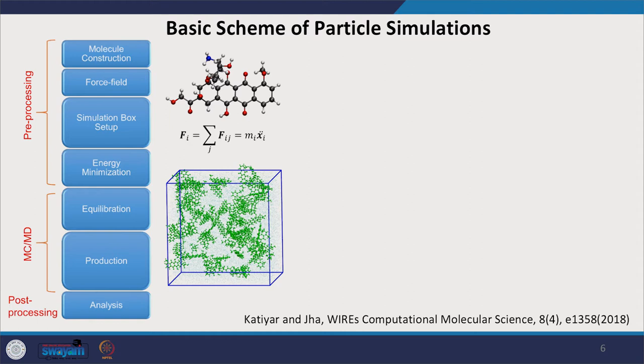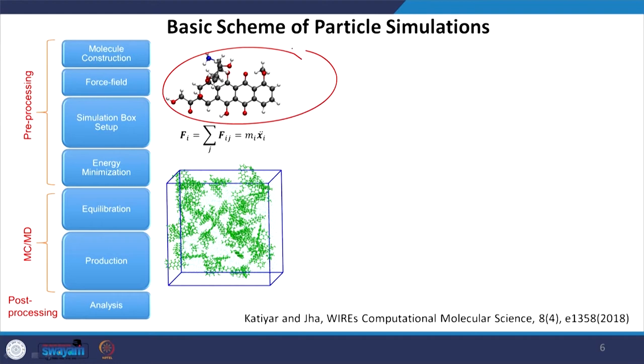This is the basic scheme of particle simulations, be it Monte Carlo or molecular dynamics. We start with constructing the molecules or models that we want to simulate — for example, a drug molecule. Then we choose a force field. The force field typically depends on the chemistry we are trying to simulate and is typically external to the software you are using — you have to borrow the force field from somewhere else. Softwares may provide an interface for doing that, but force fields are not part of any standard software; you have to think about what force field to use and find its parameters on the web or in the software.